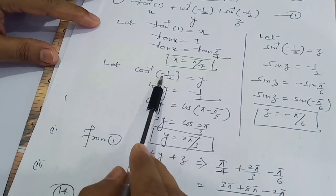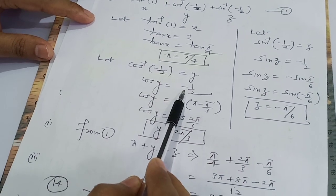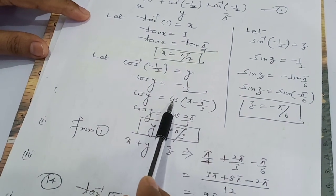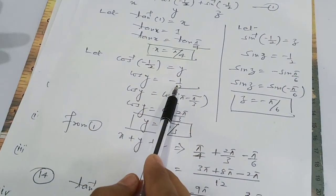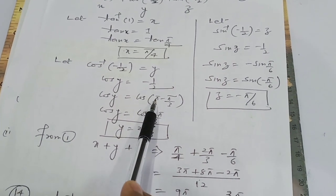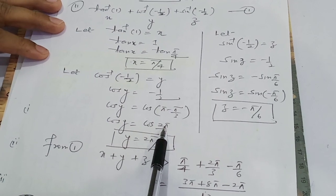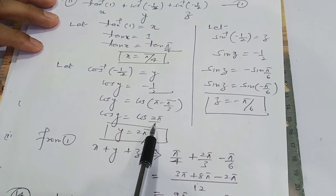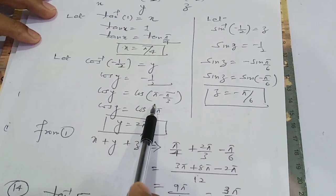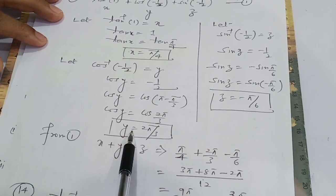For the second step, let cos⁻¹(-1/2) = y, so cos y = -1/2. Since -1/2 is negative and lies in the second quadrant, we write cos y = cos(π - π/6) = cos(2π/3), keeping within the principal solution branch. Therefore y = 2π/3.